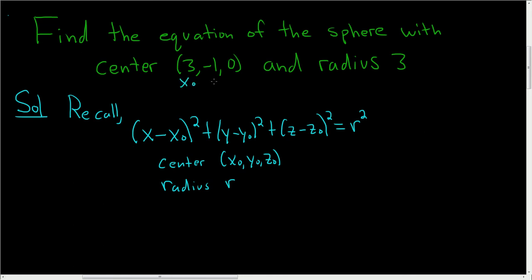So this is x₀, this is y₀, and this is z₀, and this here is our r. So we get x minus x₀, so x minus 3, and that's being squared, plus y minus. Well, it's minus a negative 1, so it's actually going to be plus 1 squared.